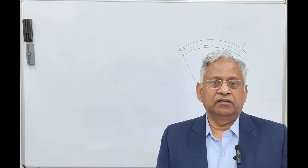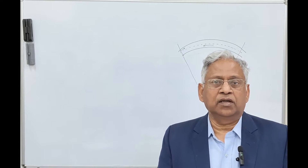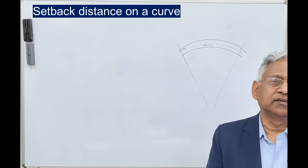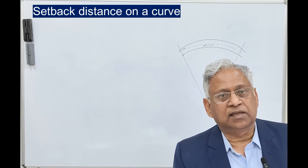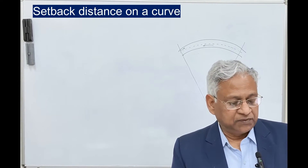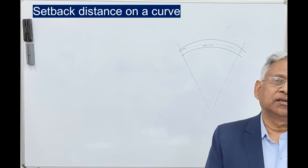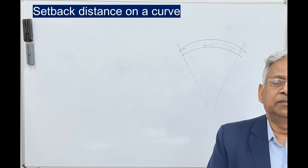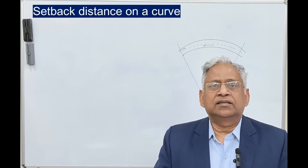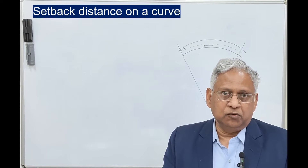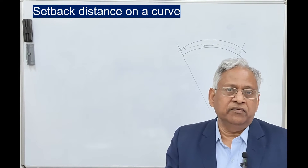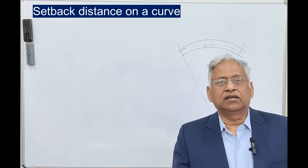Hello friends, today we will discuss setback distance on a horizontal curve. Side distance across the inside of a horizontal curve is an important element of design, and this side distance can be obstructed by several features of the ground — the profile of the natural slope, plantation, buildings, or some structure. In some cases it is possible to remove those structures, but sometimes you have to realign the highway to ensure proper side distance is available.